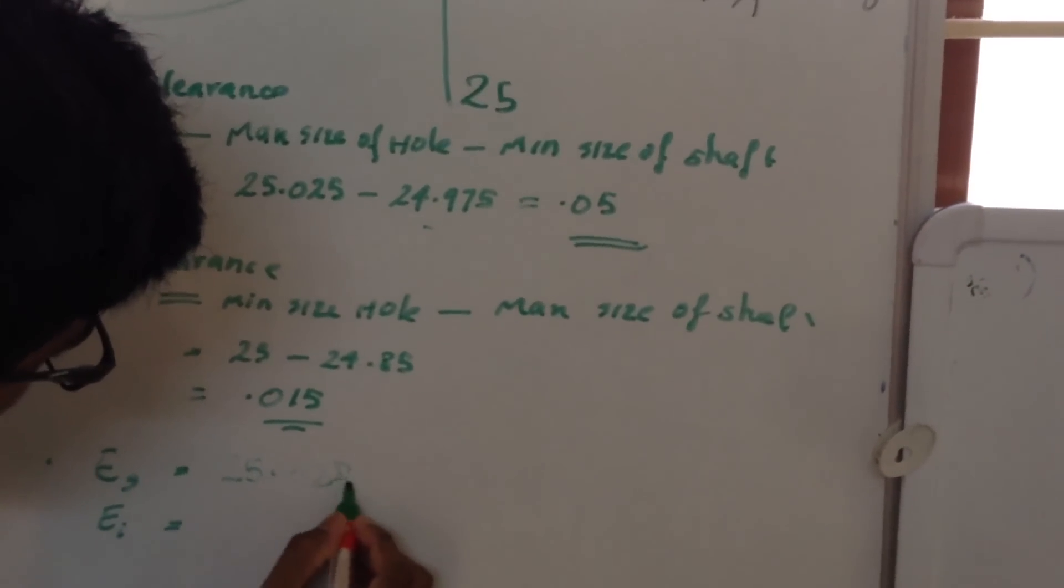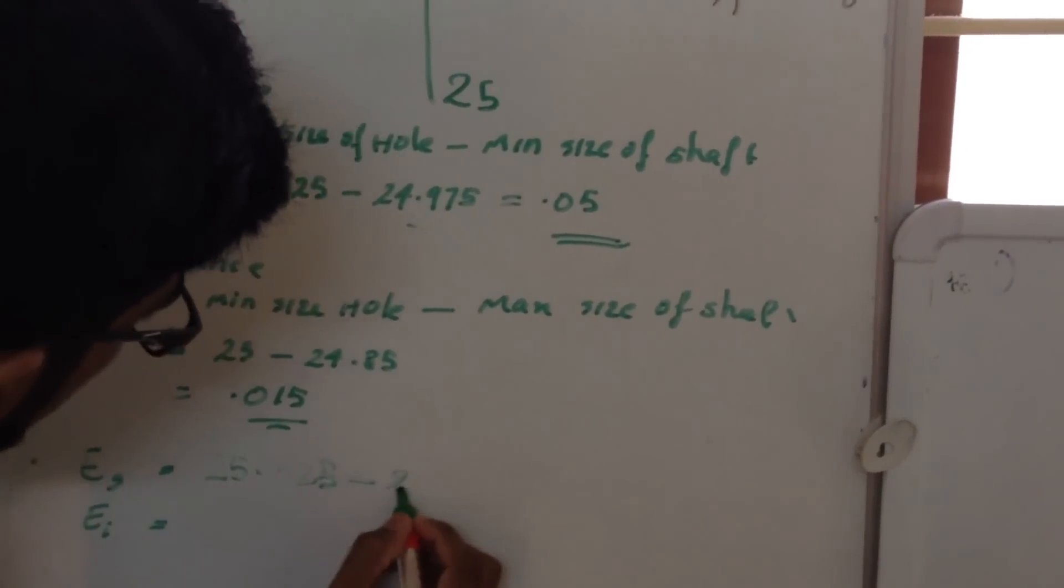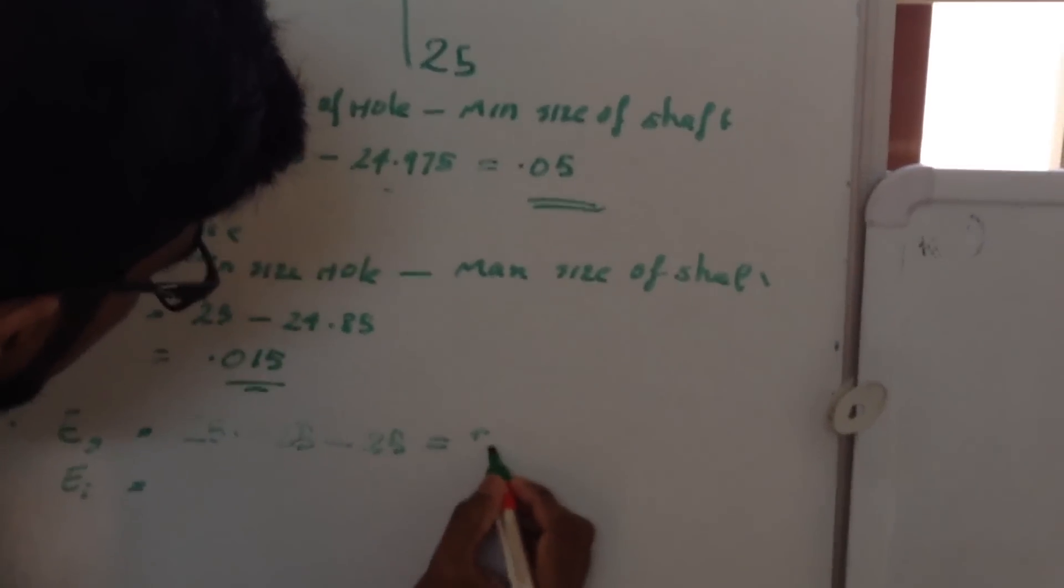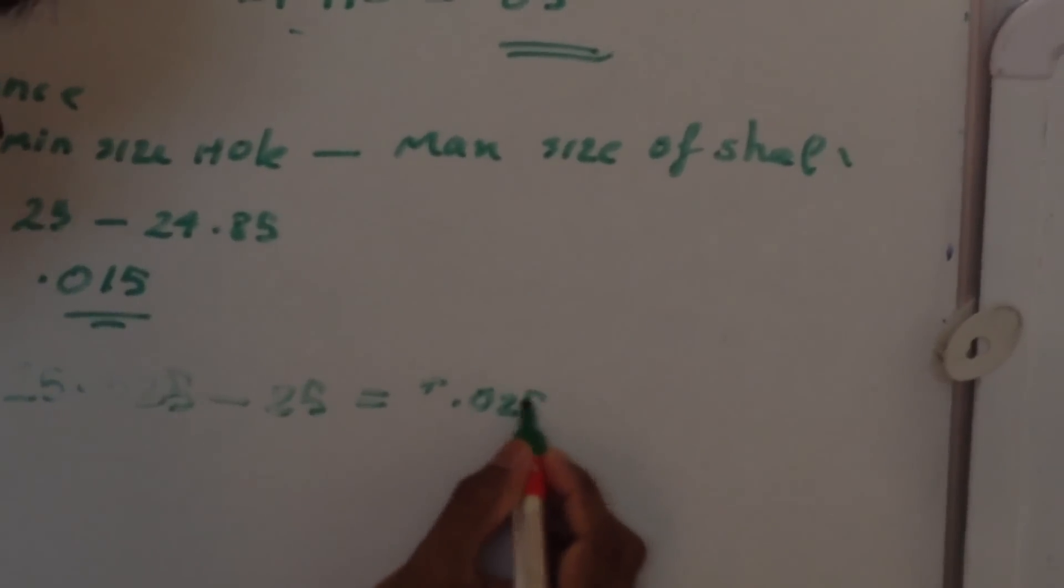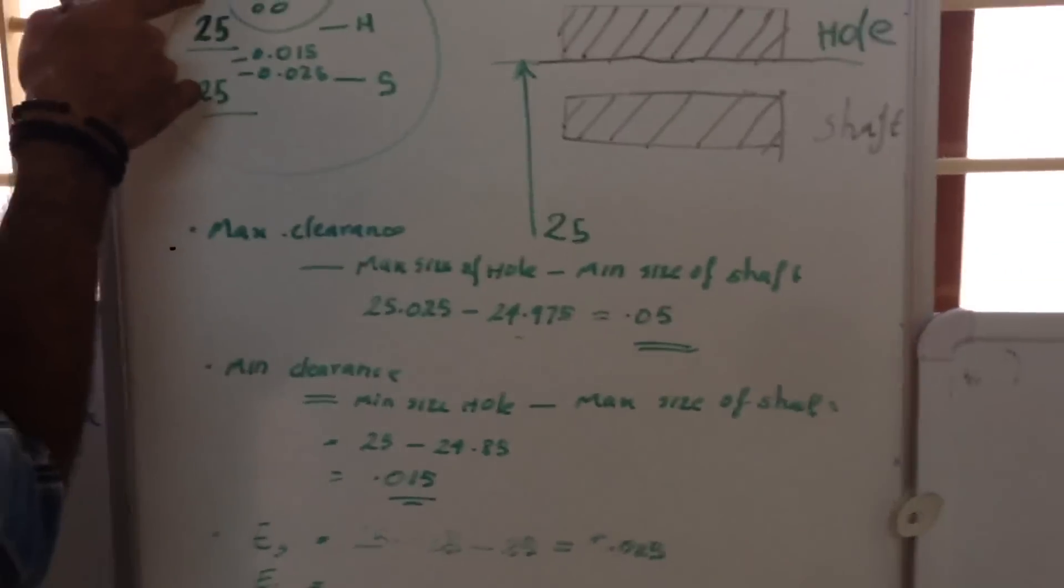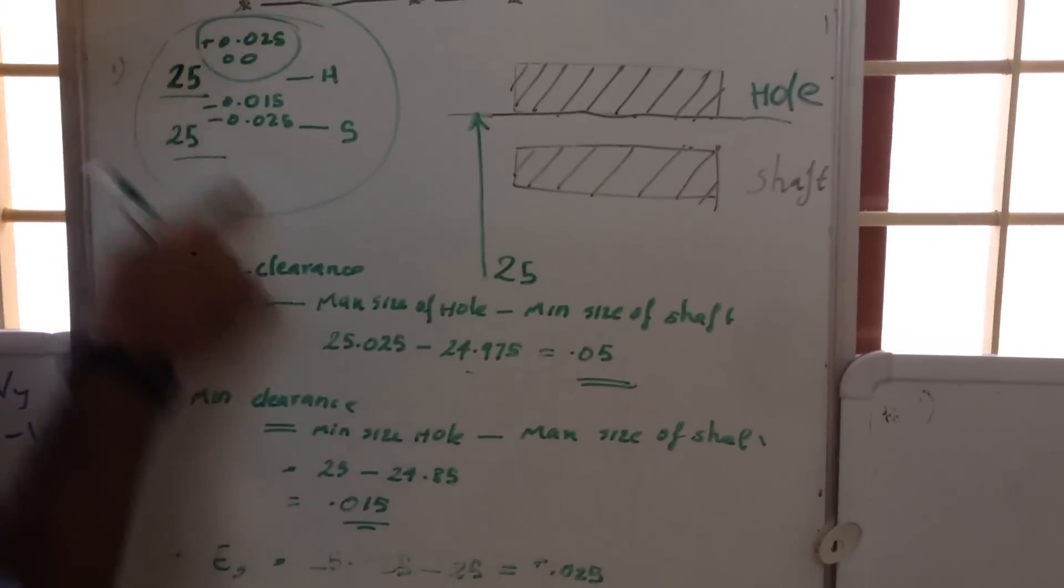25.025 minus 25 equals plus 0.025. That is, 25.025, the maximum limit of hole, minus 25.